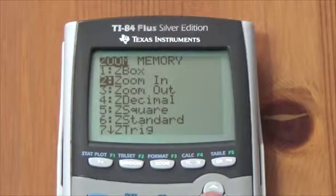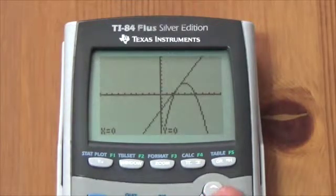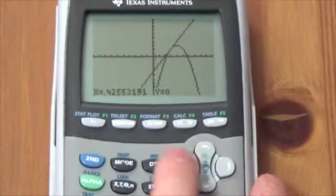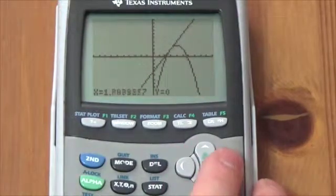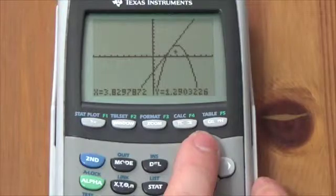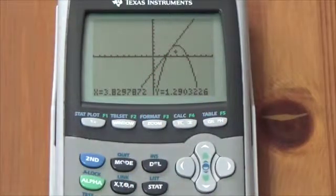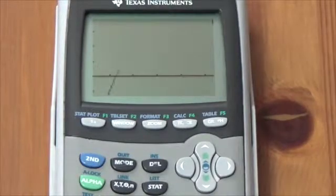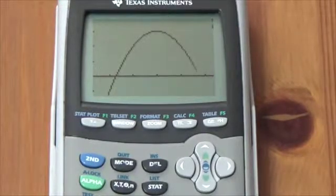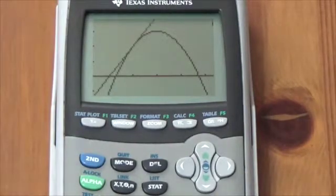First of all, it will be zoom in. When I press zoom in, I'm allowed to use my arrow keys to move my cursor around. It looks like there's some interesting stuff going on here, so I'm going to move my cursor right there. When I press enter, the calculator zooms in on that point by a factor of one quarter.